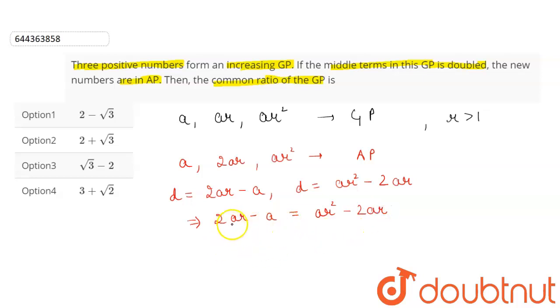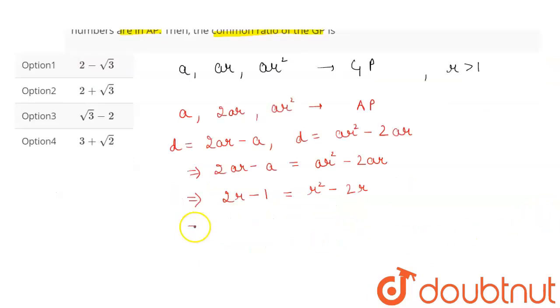Equating them, we will get 2ar minus a is equal to ar square minus 2ar. Rearranging, we will get 4r is equal to r square plus 1, and this gives r square minus 4r plus 1 is equal to 0.